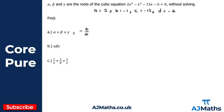For part a, the sum of the roots: alpha plus beta plus gamma equals minus b over a. That's minus minus one over two, which gives us positive one half. So that's the solution to part a.